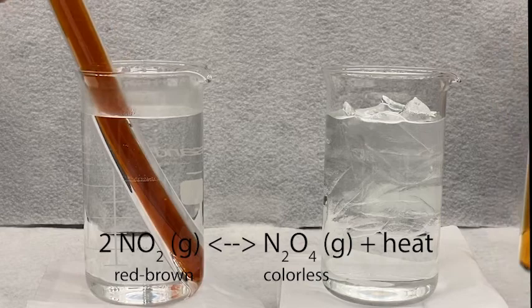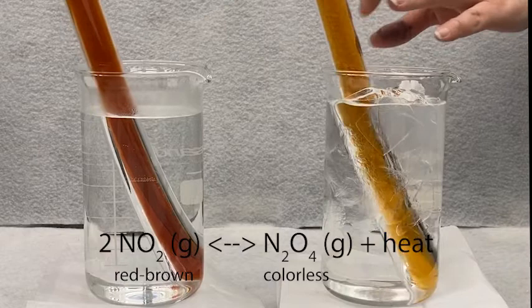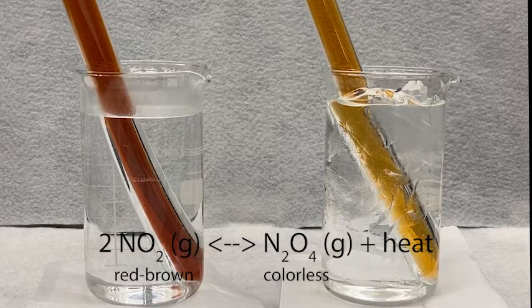Placing the other tube in cold water is the same as removing heat from the reaction, so removing a product. That will result in the conversion of NO2 to the colorless N2O4.